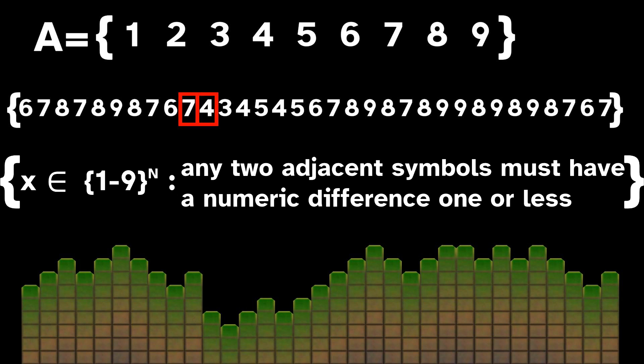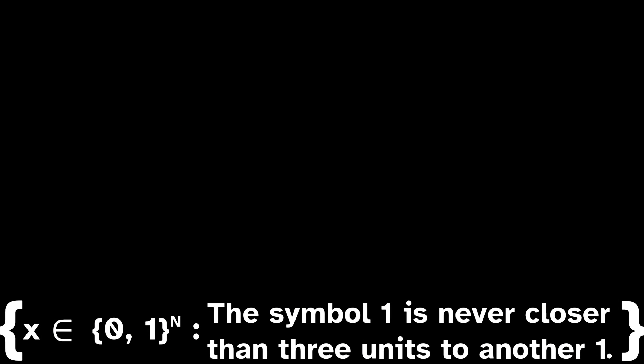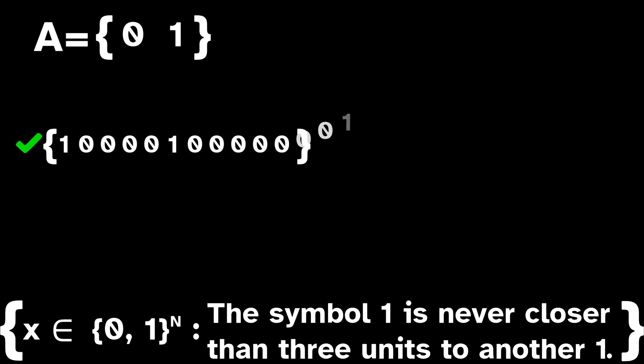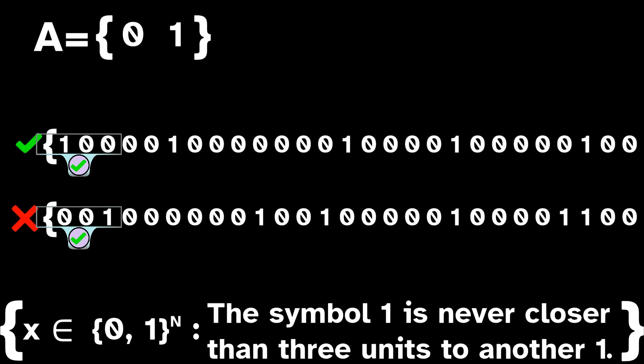To illustrate, let's tweak our definition of the golden mean shift by changing the rule to: the symbol 1 is never closer than 3 units to another 1. This generates a subshift where, in every sequence, the ones are rather sparsely distributed. But this rule is still local, because if we want to check if a sequence is allowed, we only need to look at every 4-symbol sub-sequence. We can imagine a window 4 units long scrolling from left to right along the sequence. Whether or not there are 2 ones closer than 3 units only depends on what is written in each of these 4-symbol windows.